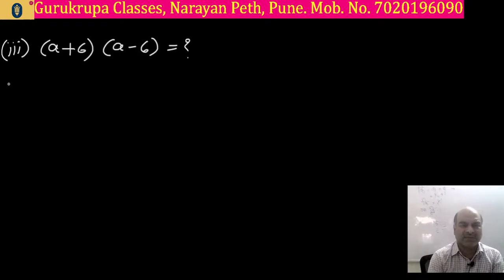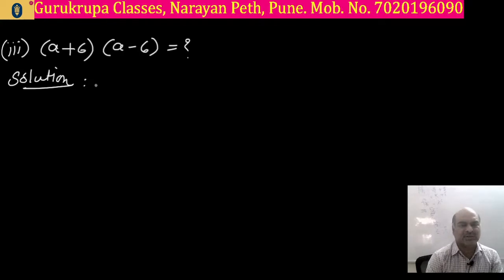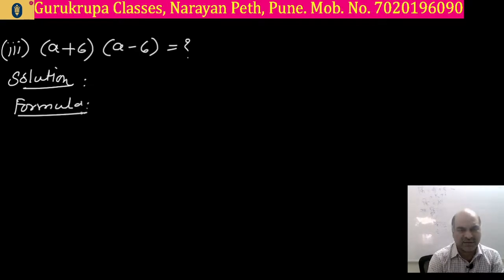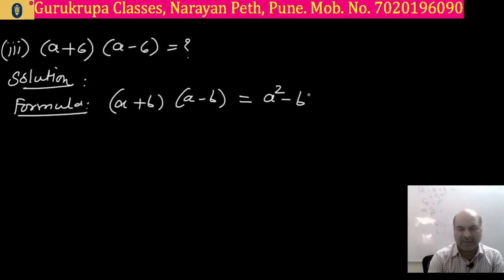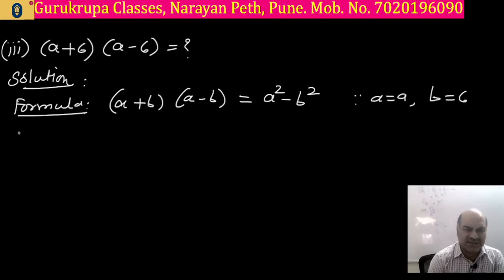In the solution we write down the formula we are going to use: a plus b into a minus b is equal to square of a minus square of b. Therefore, a is equal to a — a will be the same — but the value of b is 6. So a plus 6 multiplied by a minus 6.